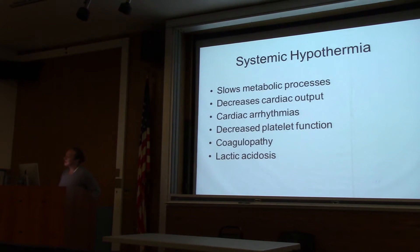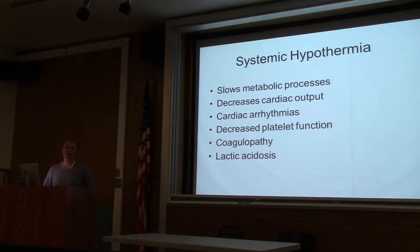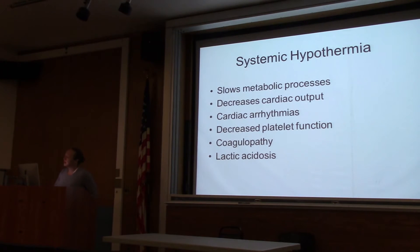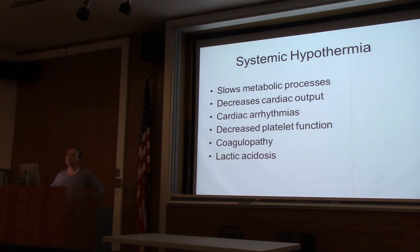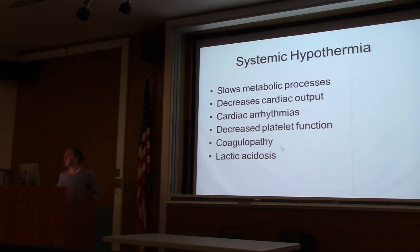Systemic hypothermia slows the metabolic process, which can be advantageous in TBI or severe traumatic brain injury patients, but it's harmful otherwise. It decreases cardiac output, predisposes to arrhythmias — AFib and ultimately ventricular fibrillation — and decreases platelet function. Many hypothermic patients also have other traumatic injuries, making hypothermia the most common cause of coagulopathy in trauma patients. These patients will also have lactic acidosis due to decreased perfusion.